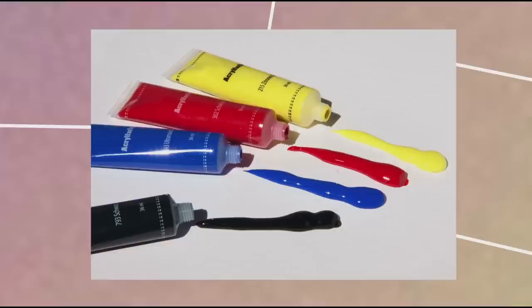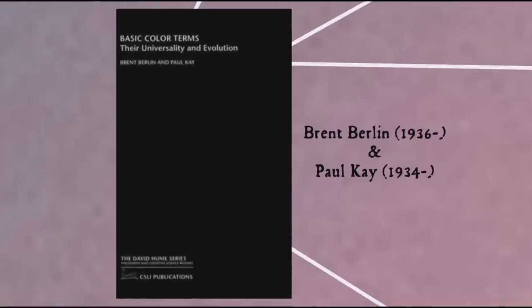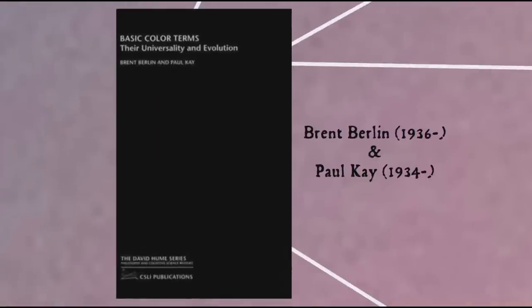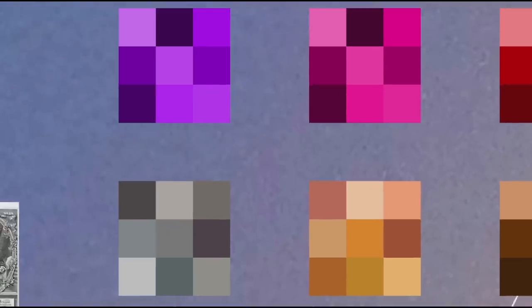What are considered basic colour terms can differ from language to language and culture to culture, and this is a subject of much debate in anthropological linguistics. Brent Berlin and Paul Kay wrote a very influential book in 1969 called 'Basic Colour Terms: Their Universality and Evolution', proposing that languages divide up colours in a predictable pattern depending on the number of basic colour terms. Level 1 languages just distinguish between black/dark/cool and white/light/warm. Level 2 adds red; level 3 adds green or yellow; level 4 has both green and yellow; level 5 adds blue; level 6 adds brown; and level 7 adds purple, pink, orange, or grey.